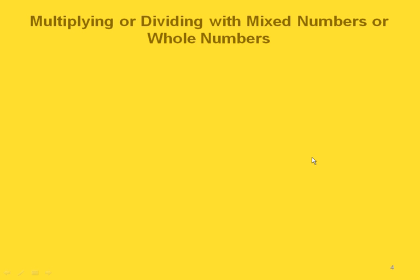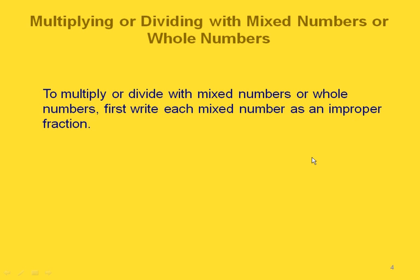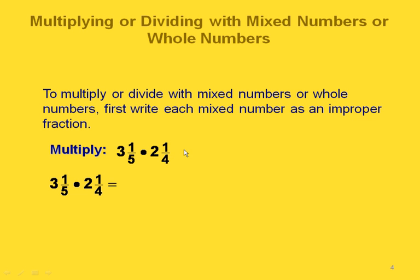Now another thing we can do with mixed numbers or whole numbers is to multiply or divide them. And in order to do that, we need to first write our mixed number as an improper fraction. Here's an example. If we want to multiply these two mixed numbers together, 3 and 1 fifth times 2 and 1 fourth, we can't multiply these the way they're written. We need to write them as improper fractions first.